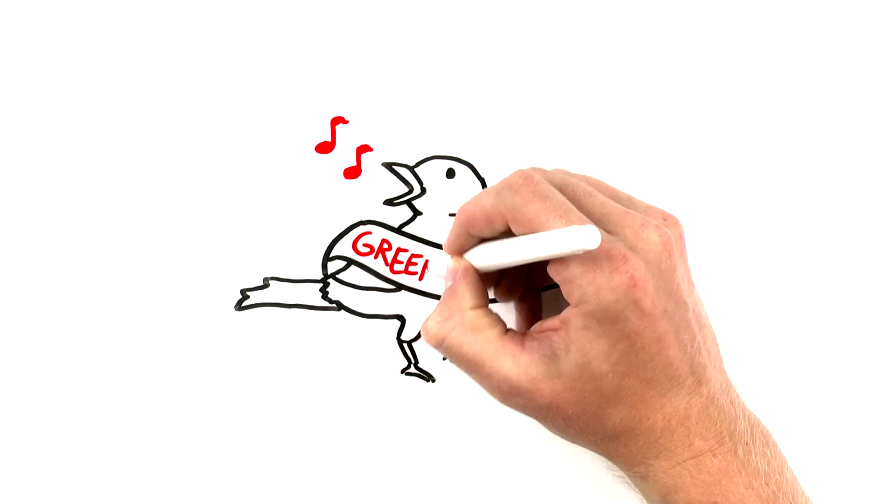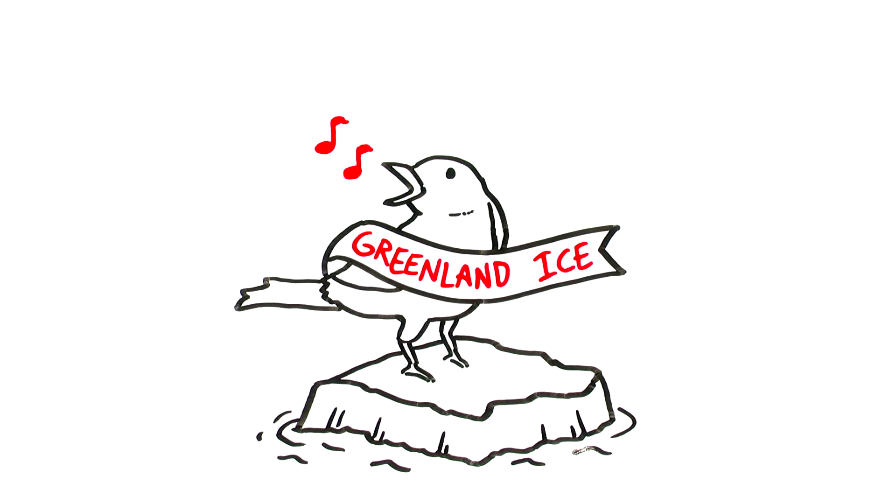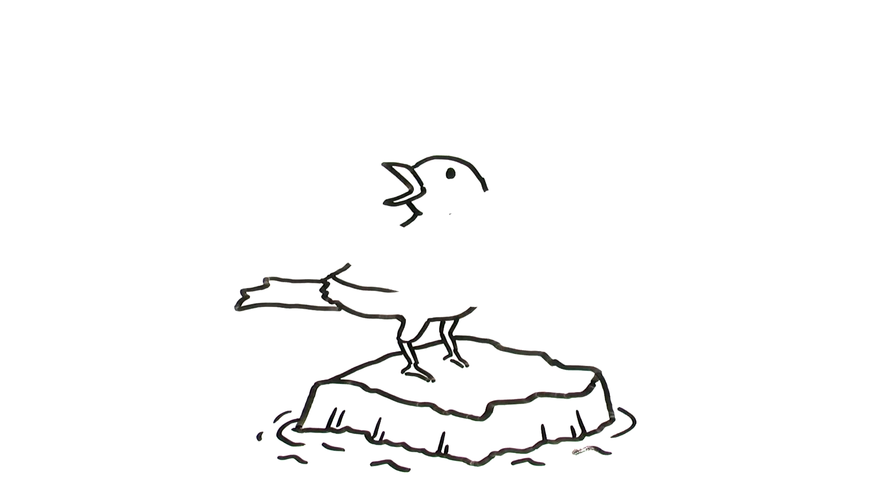Greenland's ice sheet is one of Earth's canaries when it comes to global warming. Polar regions are more sensitive to a warming Earth than other parts of the world. So what happens in places like Greenland, the rest of the Arctic, and Antarctica, alerts us to what's in store for the rest of the planet.